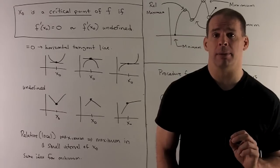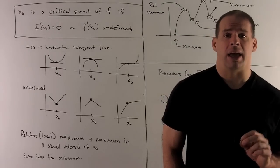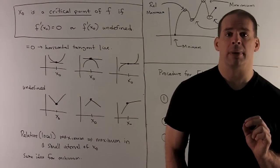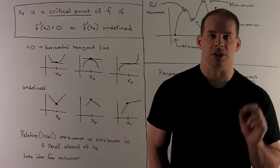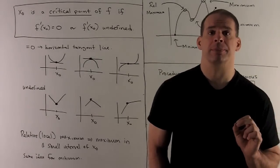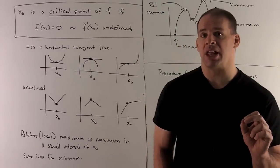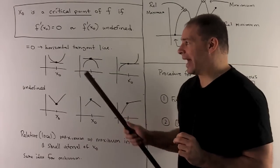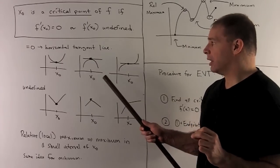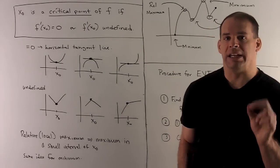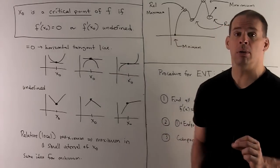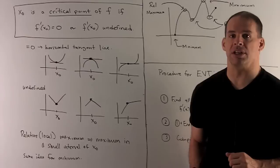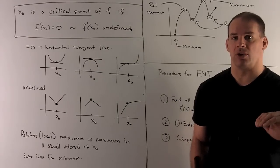Looking at our case where we had a maximum and minimum, we're led to the following definition: x₀ is called a critical point of f if, when I take the derivative of f at x₀, I get either 0 or undefined. When the derivative equals 0, we have a horizontal tangent line — which can mean a minimum near x₀, a maximum near x₀, or neither, where the function just flattens out and keeps going in the same direction.